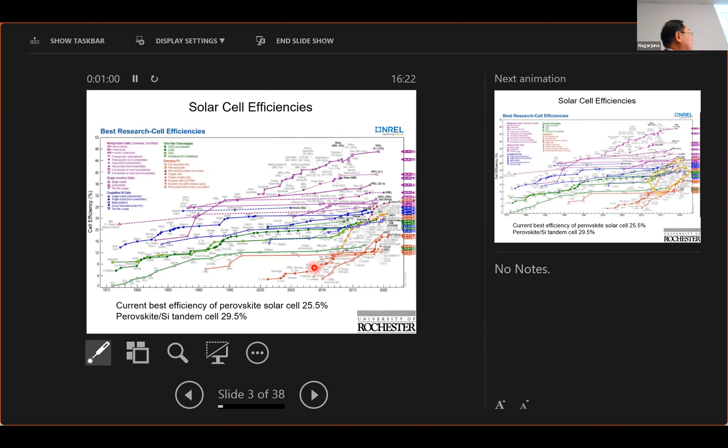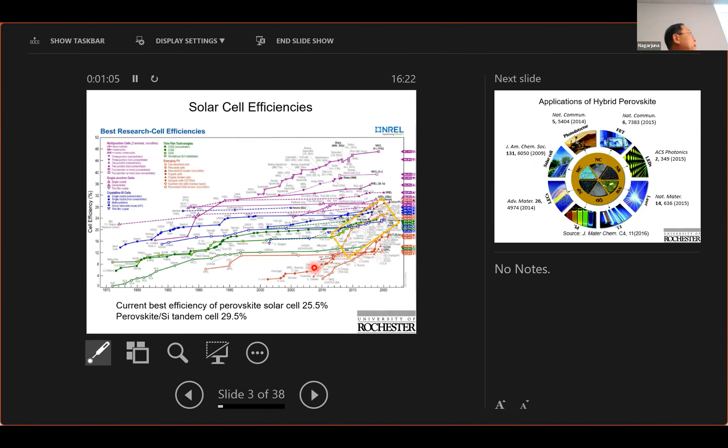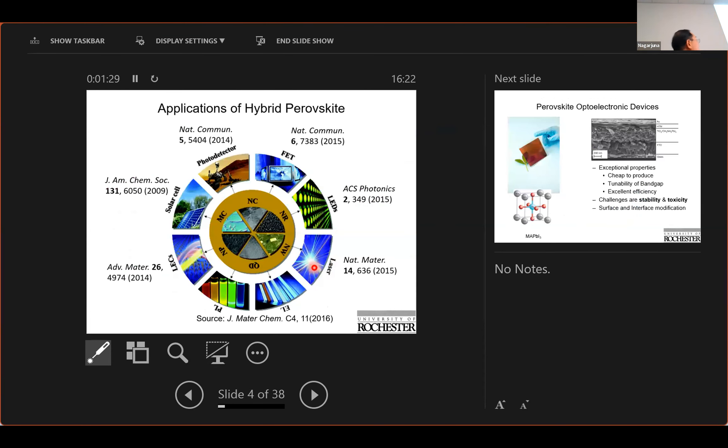This perovskite material actually is peculiar, first being noticed by its performance in solar cells. In the decade, its efficiency increased from just about a few percent up to about 25.7 percent and is almost to the theoretical limit of 31 percent. So this material has raised the attention of the research community and many different types of devices made with this material.